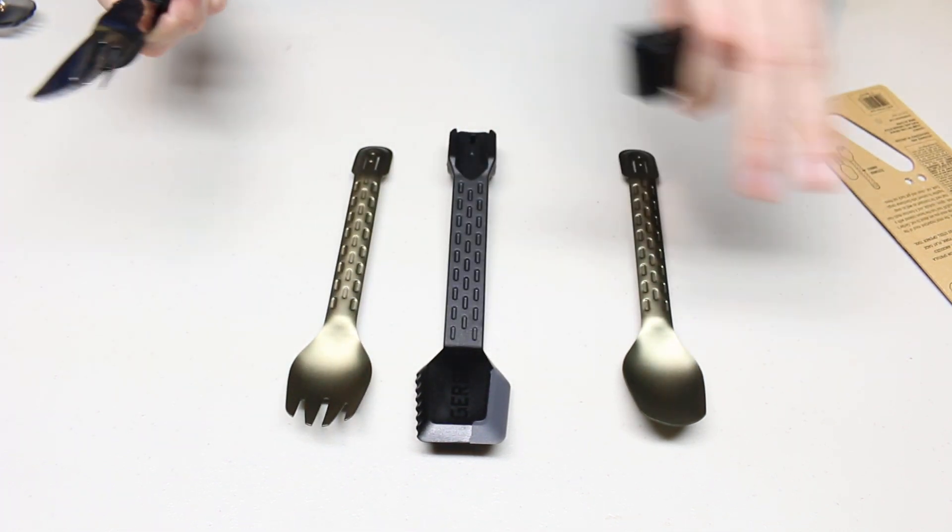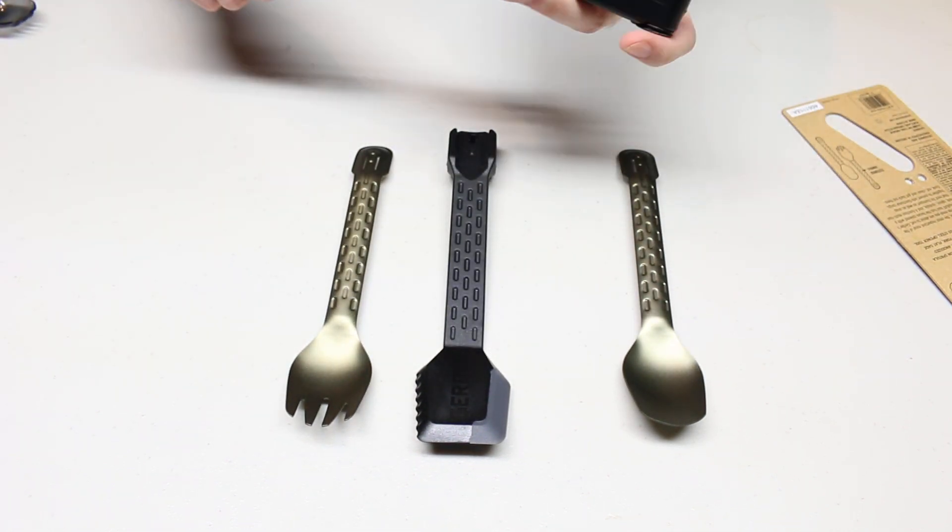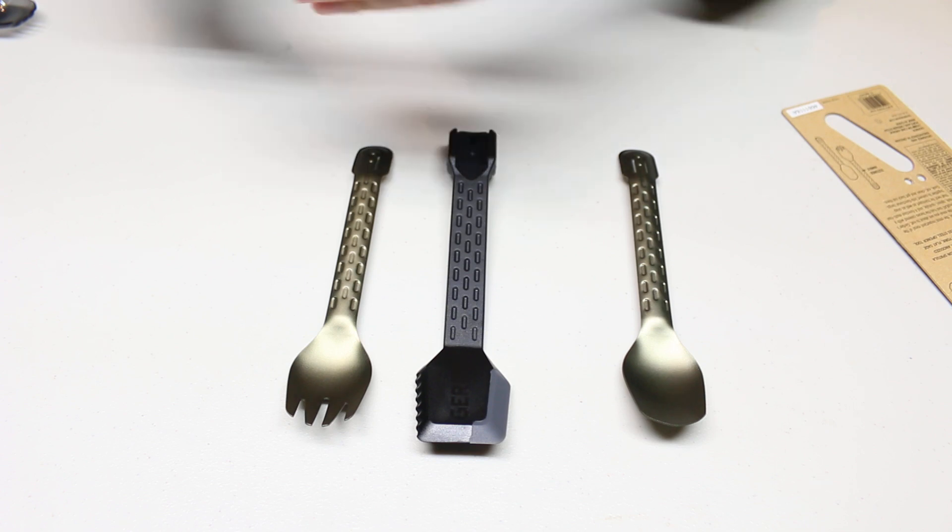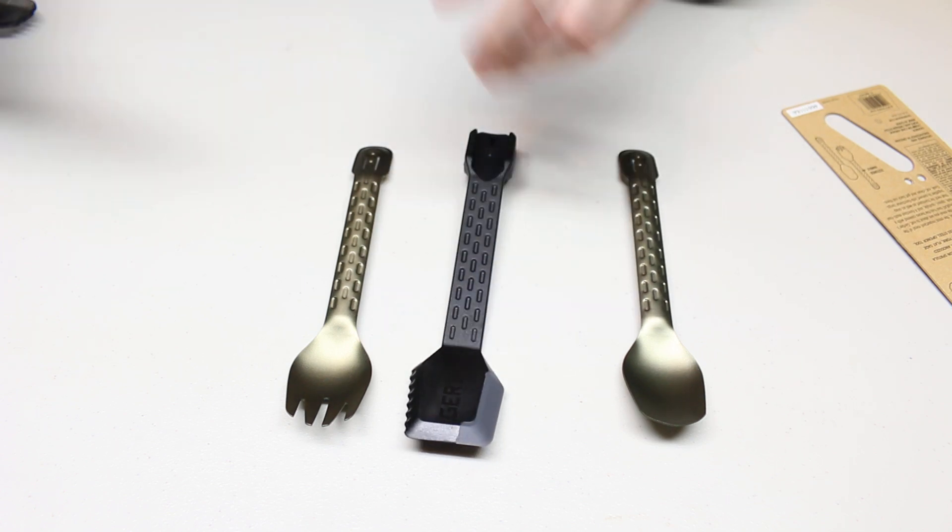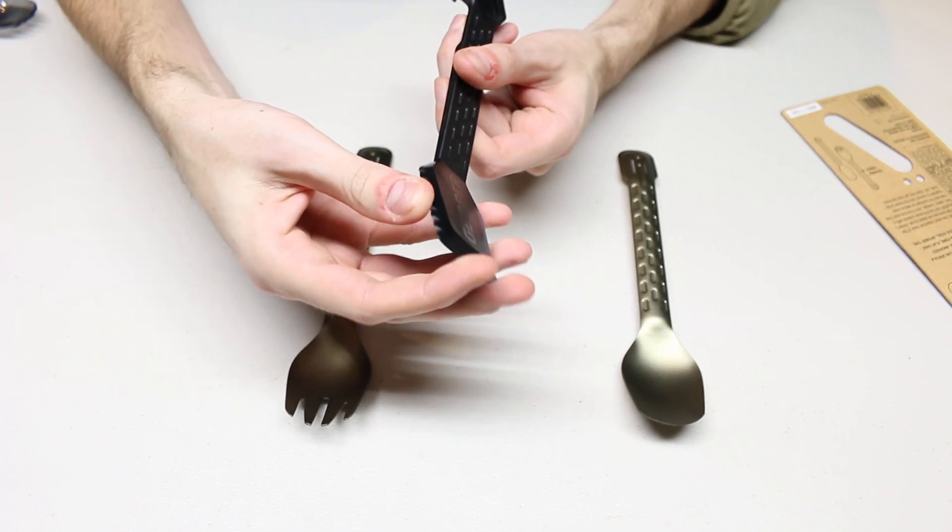But on this, it does have the fork and spoon, but no knife. It does have a serrated edge on the spatula. So that will work rather well.